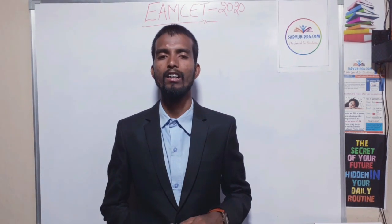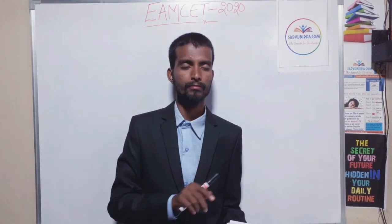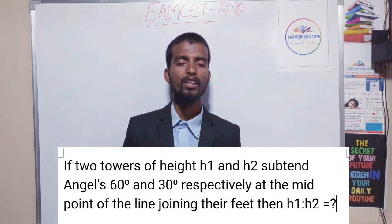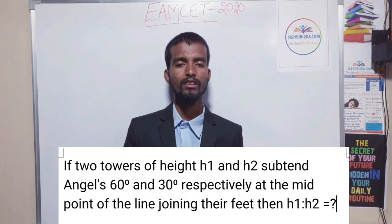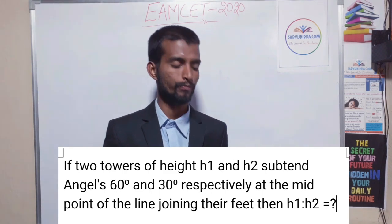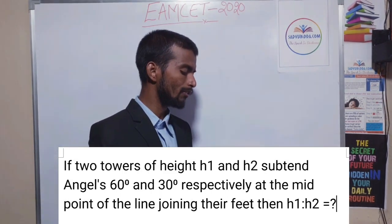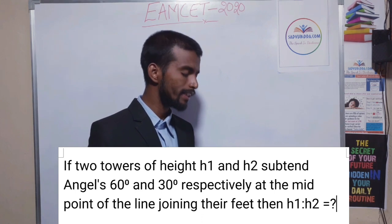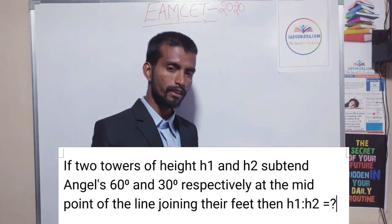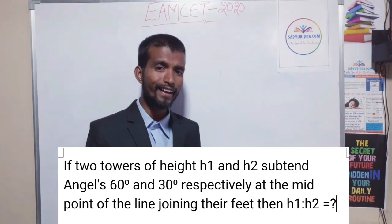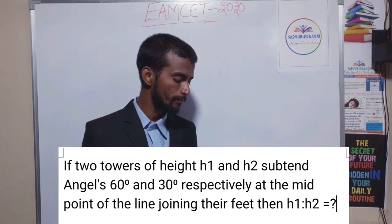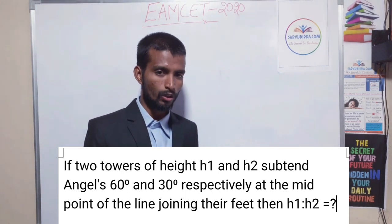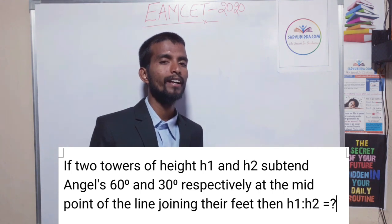We will get an idea of how the classes will be from tomorrow. You can note down the question while I am reading it, or you can see the question on your screen. This is the question: If two towers of height H1 and H2 subtend angles of 60 degrees and 30 degrees respectively at the midpoint of the line joining their feet, then what is the ratio of H1 to H2?